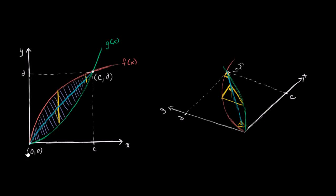Let's see if we can imagine a three-dimensional shape whose base could be viewed as the shaded-in region between the graphs of y equals f of x and y equals g of x. That mauve or purple color is the base of it, but then it's kind of popping out of our screen. What I've drawn here in blue, you could view as the top ridge of the figure. And if you were to take cross-sections of this figure that are perpendicular to the x-axis, those cross-sections are going to be isosceles right triangles.